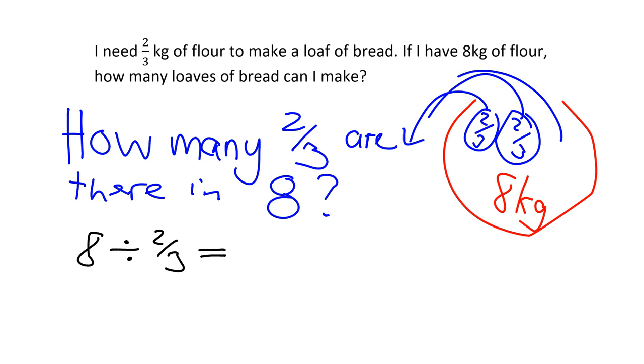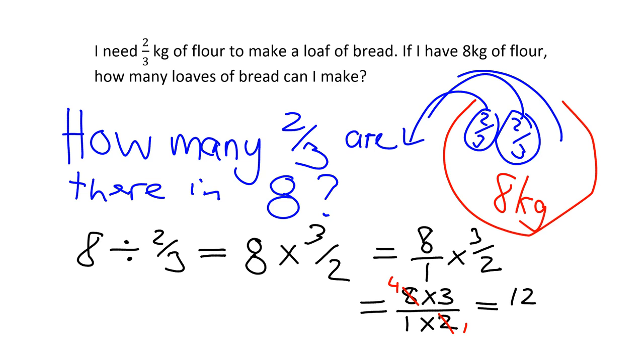How do we do division with fractions? Well, keep, change, flip. So we keep our 8, we change our division to a multiplication, and we flip. And this is easy to do. We know that 8 is just 8 over 1, multiply by 3 over 2, and that gives us 8 times 3 over 1 times 2. And I can cancel top and bottom, because they both can divide by 2. And then I will get 4 times 3, which is 12, and 1 times 1, which is 1. And we know 12 over 1, anything over 1 is just itself. So the answer is 12.